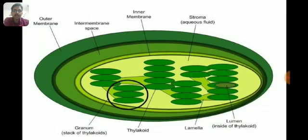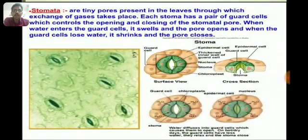Stomata are tiny pores present in the leaves through which exchange of gases takes place. Each stoma has a pair of guard cells which controls the opening and closing of the stomatal pore. When water enters the guard cells, they swell and the pore opens, and when the guard cells lose water, they shrink and the pore closes.